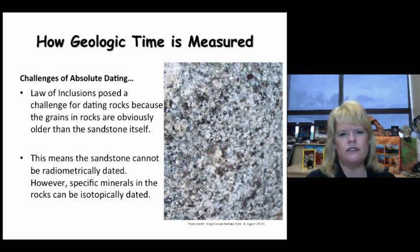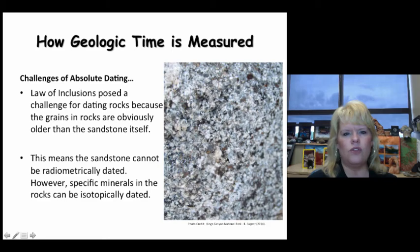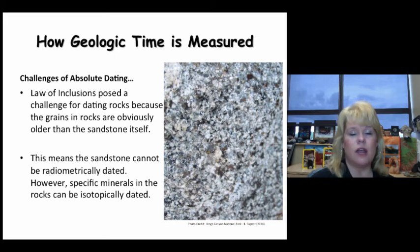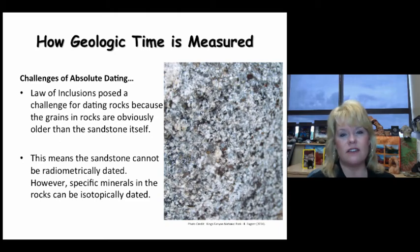One challenge of absolute dating is the law of inclusion, which states that anything included in a rock — like an inclusion from another rock — must by definition be older than the rock it's in. This means individual grains in a sandstone or granite are older than the rock itself, so the sandstone cannot be radiometrically dated directly. However, specific minerals in rocks may be dated isotopically. You can't take just one clue and make an assumption — you need a comprehensive, holistic view.